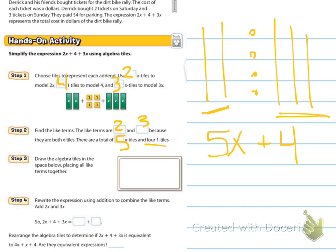Okay, and then, I guess they're going to pre-fill for us that they're our 4, 1 tiles. So, we've got our 1's values are here. And then, if we put together our 2 and our 3 here, we have 5 all together. Okay, so, we have 5X's plus 4 1's. So, it says to draw the algebra tiles in the space below, placing all like terms together. So, I'm going to put my 1, 2, 3, 4, 5X's together. 1, 2, 3, 4. 4, 1's values together. And so, it says to rewrite the expression using the addition to combine the like terms. We're going to add 2X's plus 3X's. And so, if we're rewriting 2X plus 4 plus 3X, we can call it 5X plus 4.